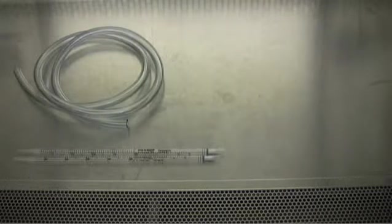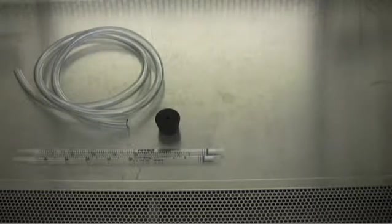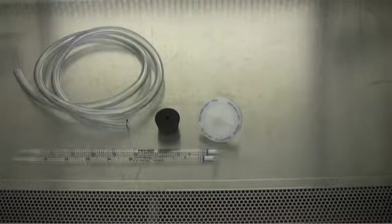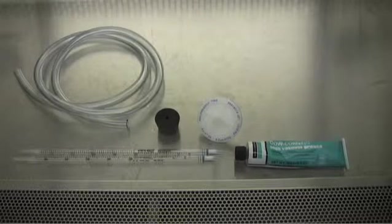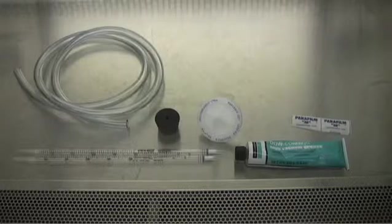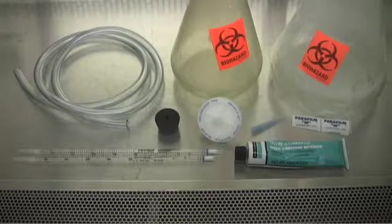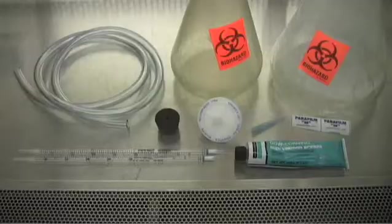To do this you're going to need tubing, standard 5mm pipettes, some rubber stoppers, a filter, some vacuum grease, some parafilm, pipette tip, and of course two sidearm flasks.